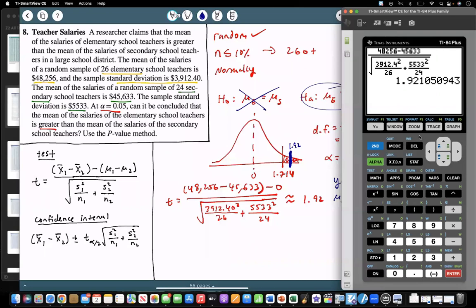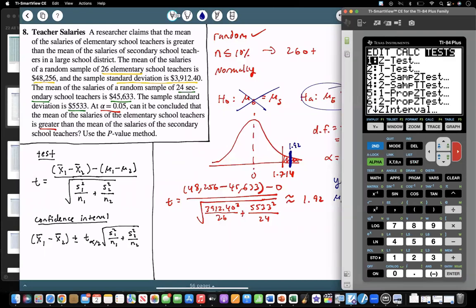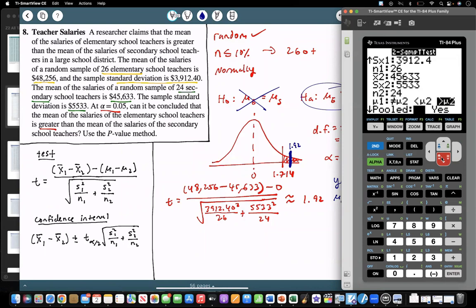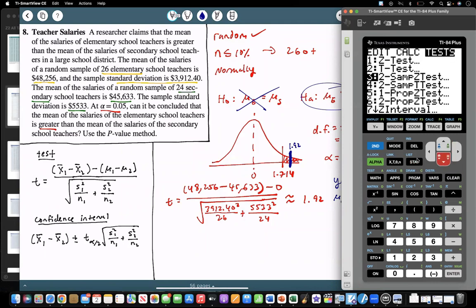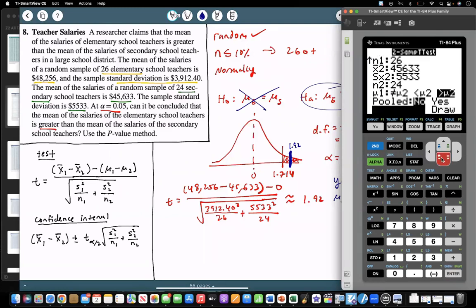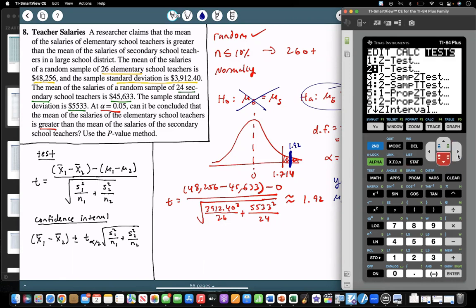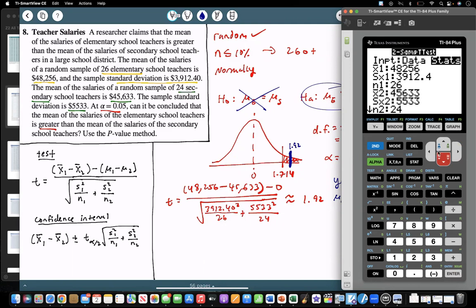So if we check this on the calculator. If we go to stat, go over to our tests. We have two samples here. So we have two samples with Z and T. So we're in the T distribution, so number four here. I already have this typed in, so the 48,256, 3912. In each of those, so if you type in, put elementary first, secondary second, type in your respective mean, sample size, and standard deviation. Greater than is under alternative hypothesis. So just click enter at the bottom. And you can see that we should, in fact, get the same 1.92, so that was correct.